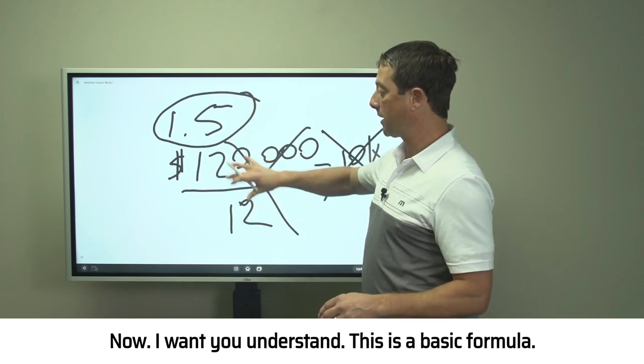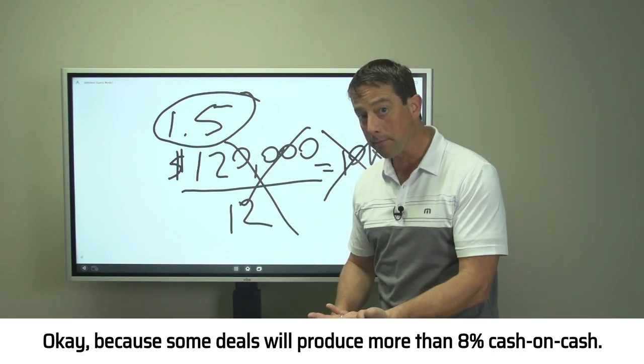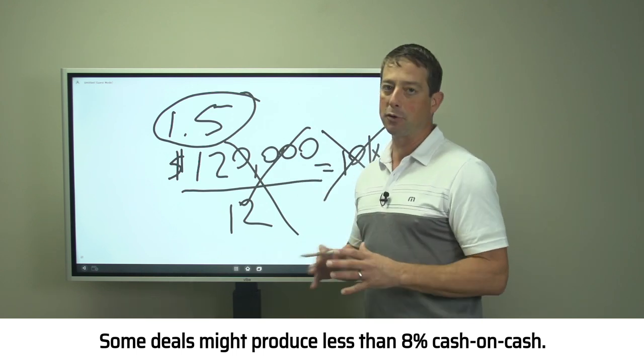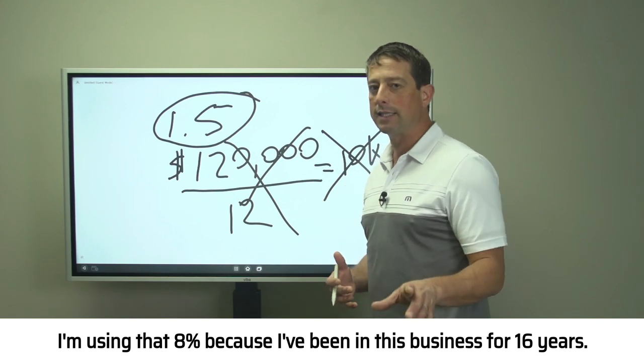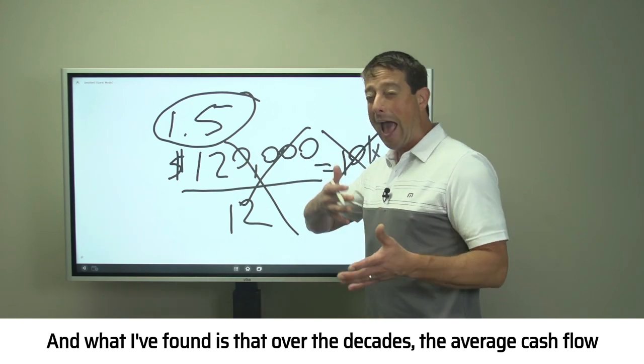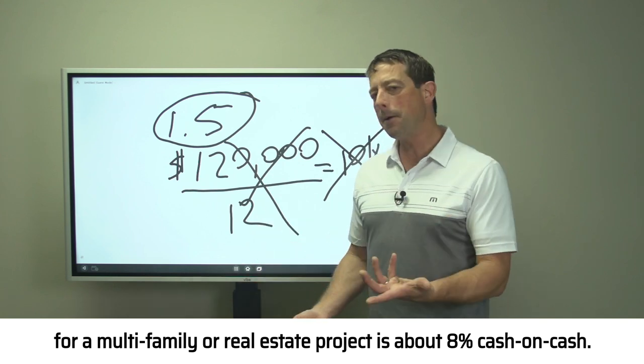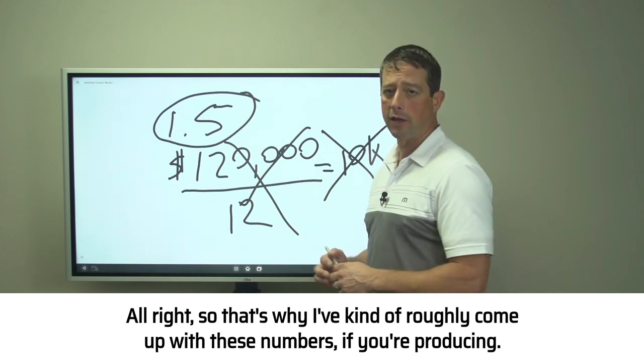Now I want you to understand this is a basic formula, because some deals will produce more than 8% cash on cash, some deals might produce less. I'm using 8% because I've been in this business for 16 years, and what I've found is that over the decades, the average cash flow for a multi-family or real estate project is about 8% cash on cash.